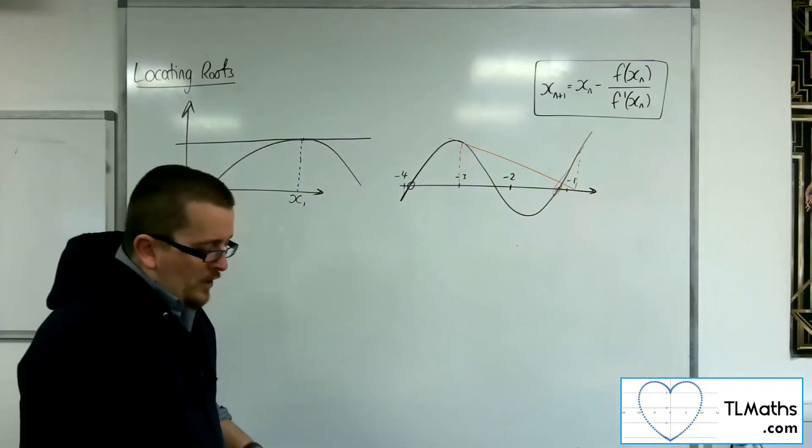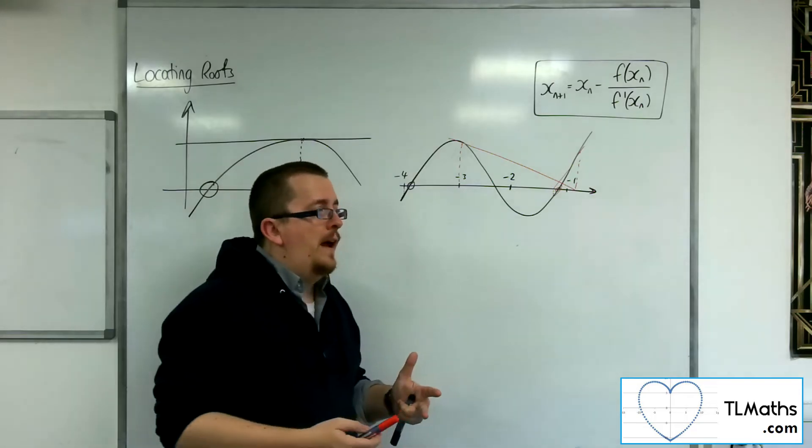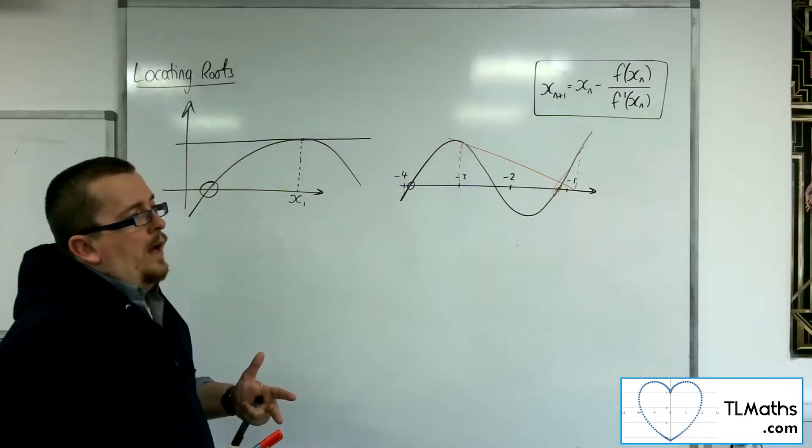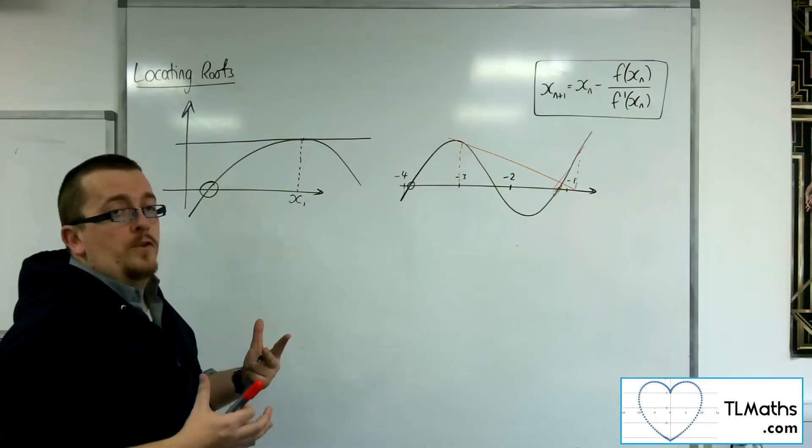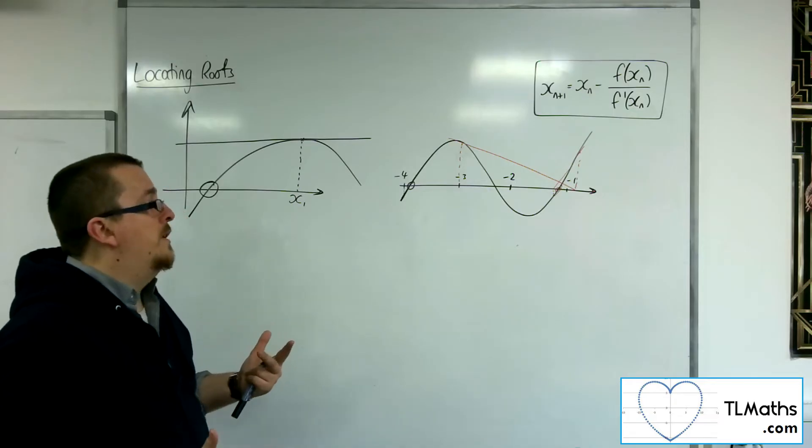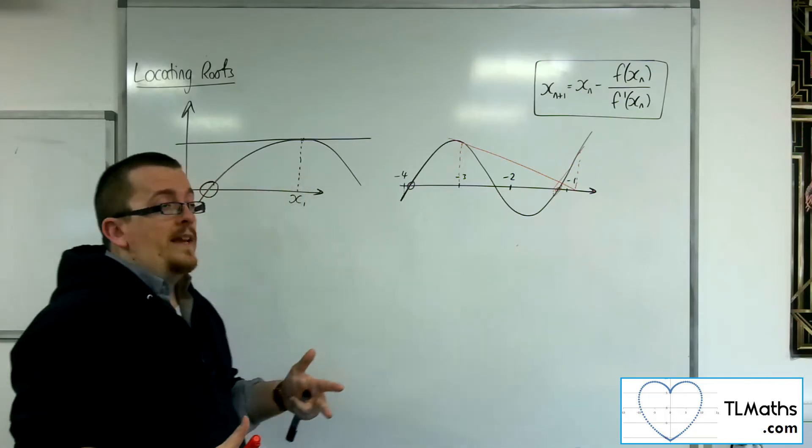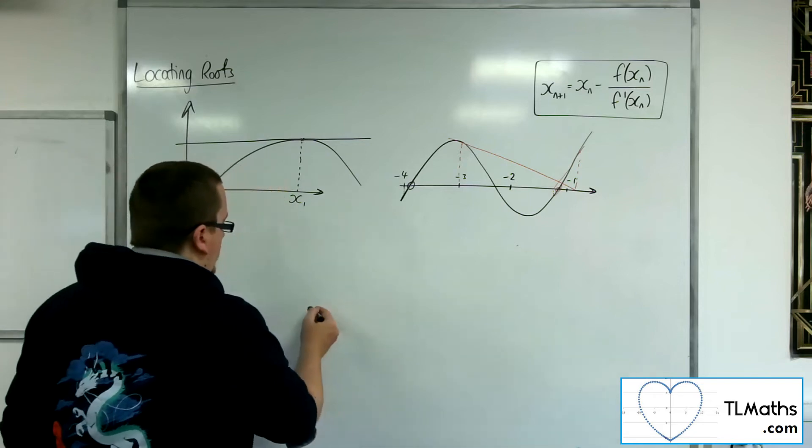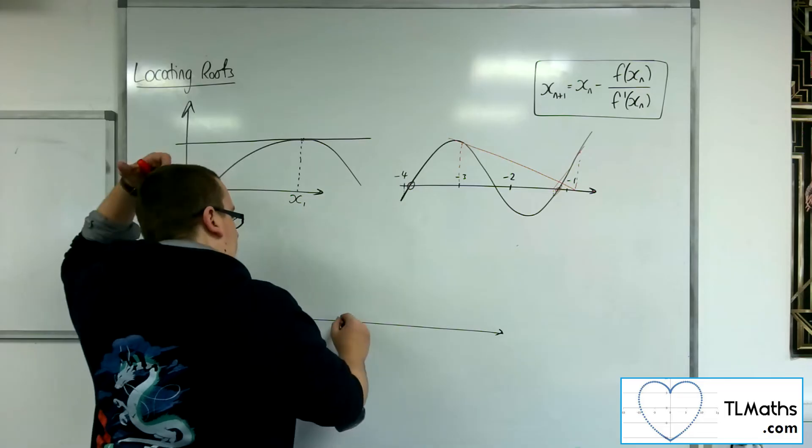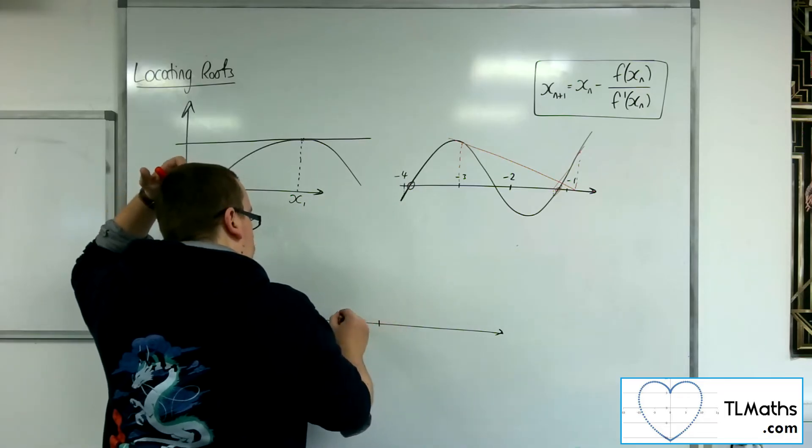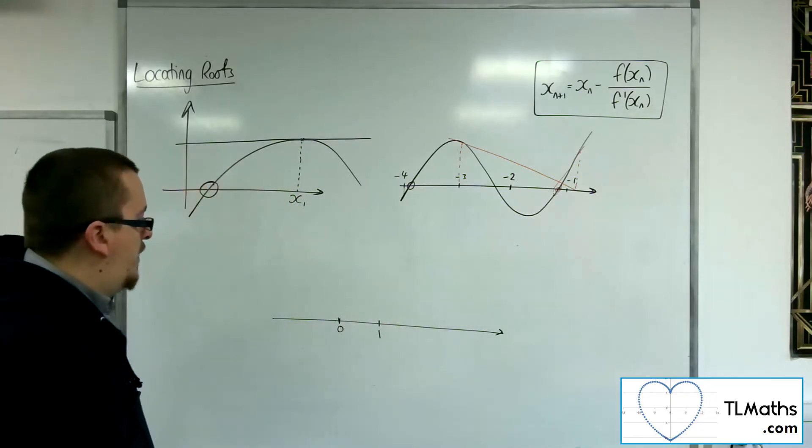So could it be that you have a situation where neither of your starting values at minus 4, minus 3, you know the route's between those two, neither of them actually work. Well, that might be a little bit challenging to draw, but I will give it a go. So let's say I know that there is a route between 0 and 1 using the change of sign method.